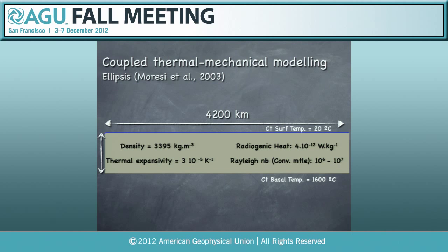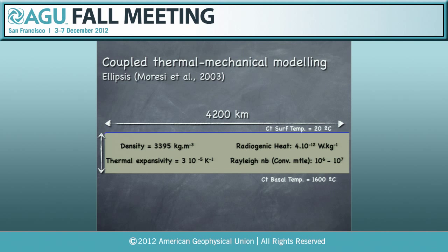To test this further, we need to move into modeling. I'm going to use a code called Ellipsis that allows coupled thermomechanical modeling. I'm going to consider a model 4200 kilometers long and 700 kilometers deep. I want good resolution in the upper part of the system, so I limit myself to convection in the upper mantle.